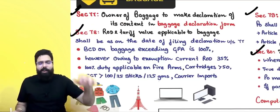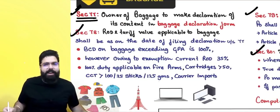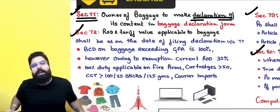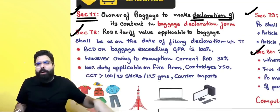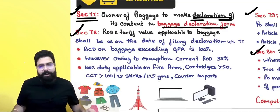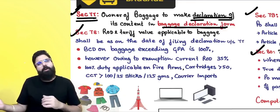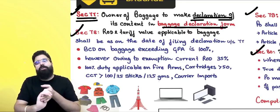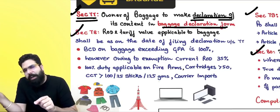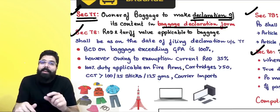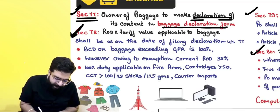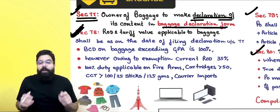Section 77 states that whenever you are coming from outside India, you as the owner of the baggage have to make a declaration. At an international airport, you must declare what is in your baggage by filling a Baggage Declaration Form. If a person has something dutiable in their baggage, they must declare its contents and file that Baggage Declaration Form.